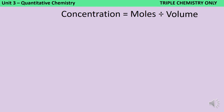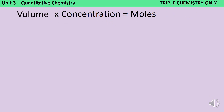You also need to be able to rearrange this equation to work out moles based on concentration. At the moment, moles is divided by volume. To get rid of that divide-by-volume, we multiply both sides by volume — the divide and multiply cancel each other out. Whatever we do to the right-hand side of the equation, we do to the left-hand side as well. So multiplying both sides by volume gives us: moles = concentration × volume.